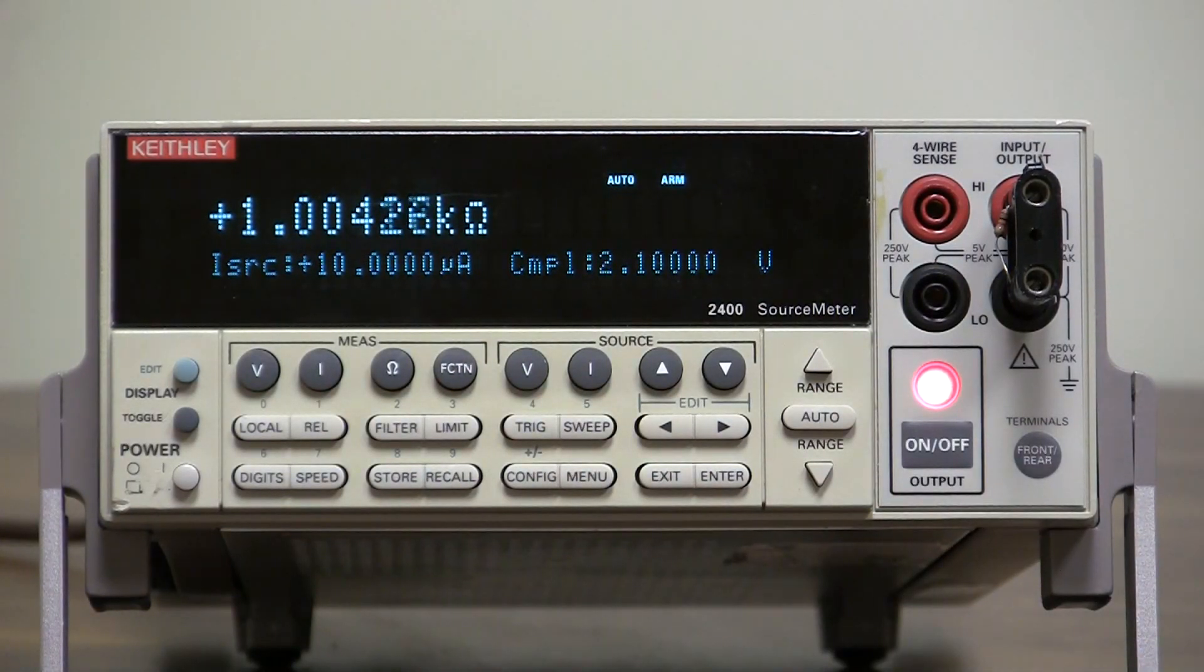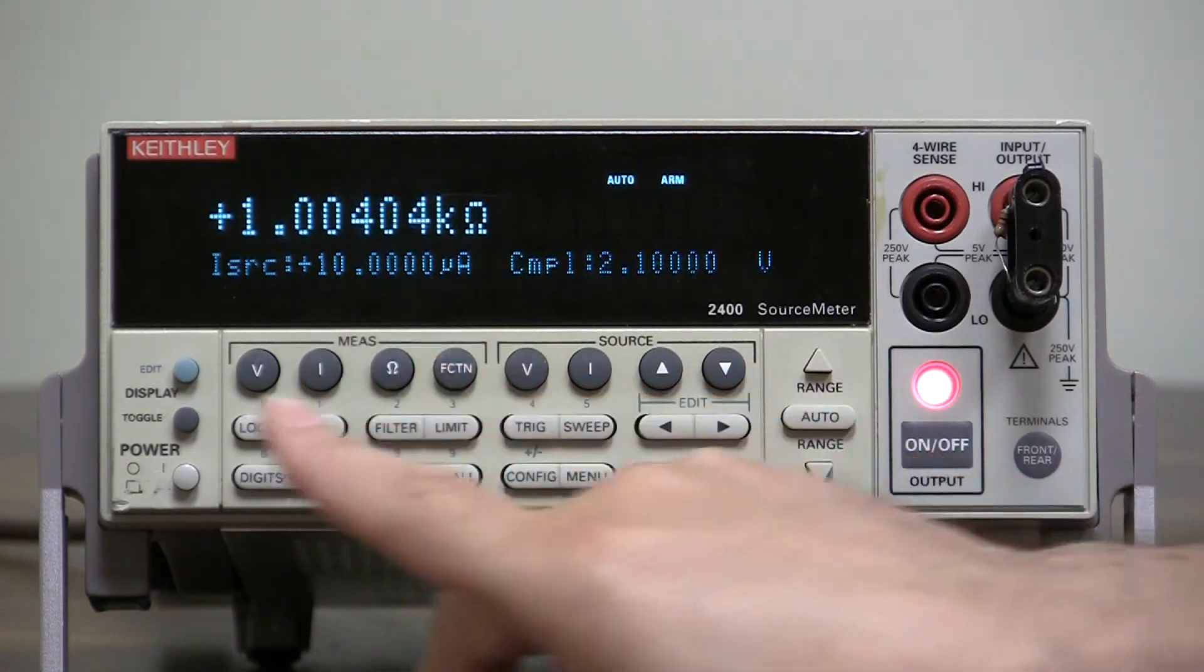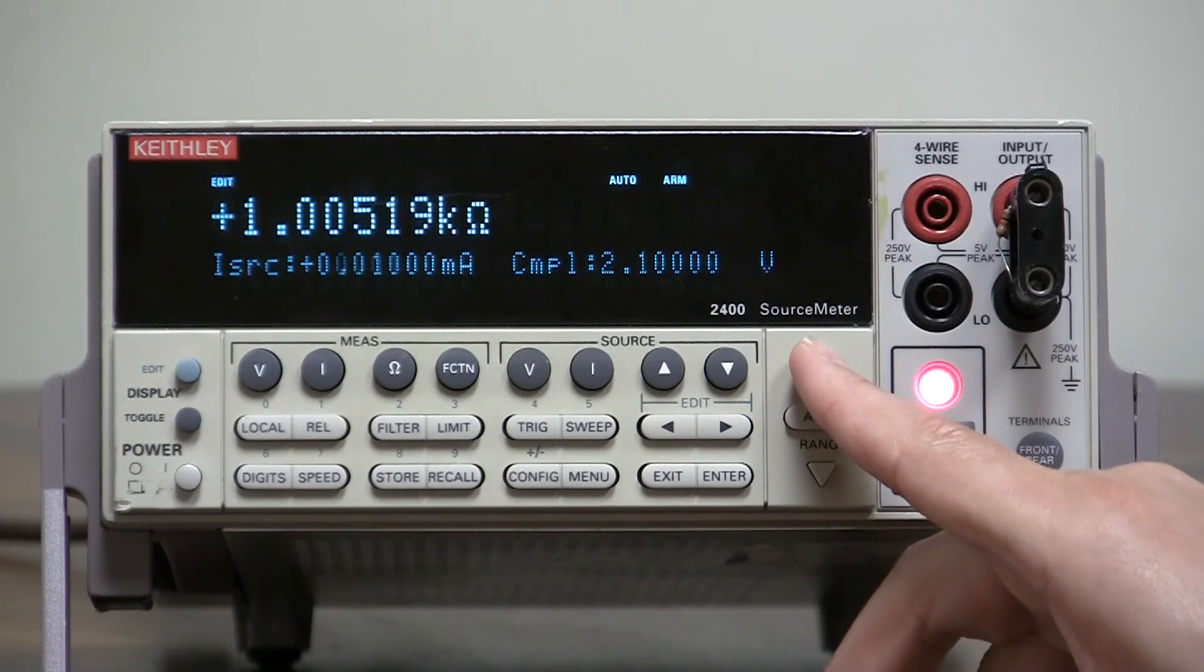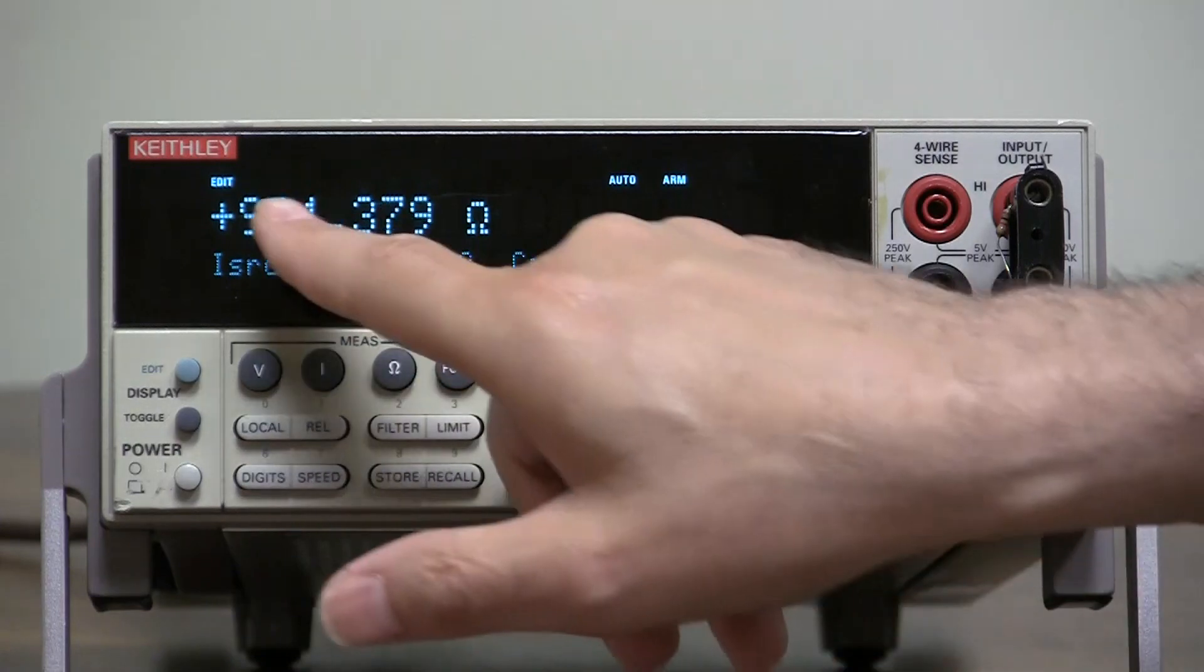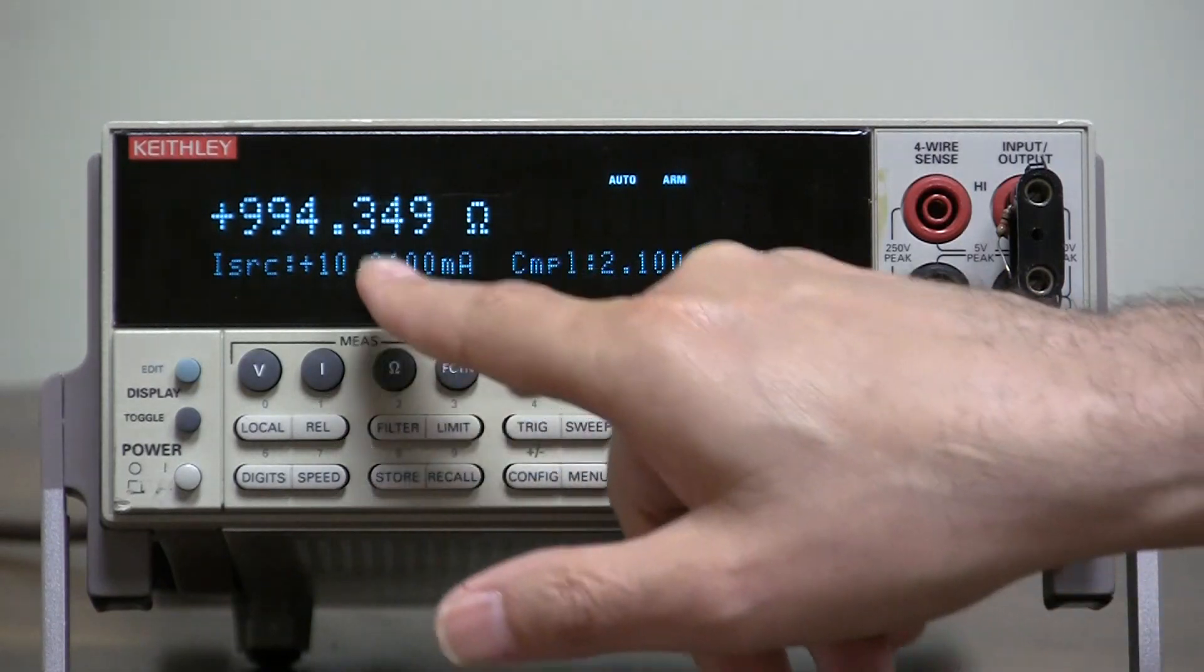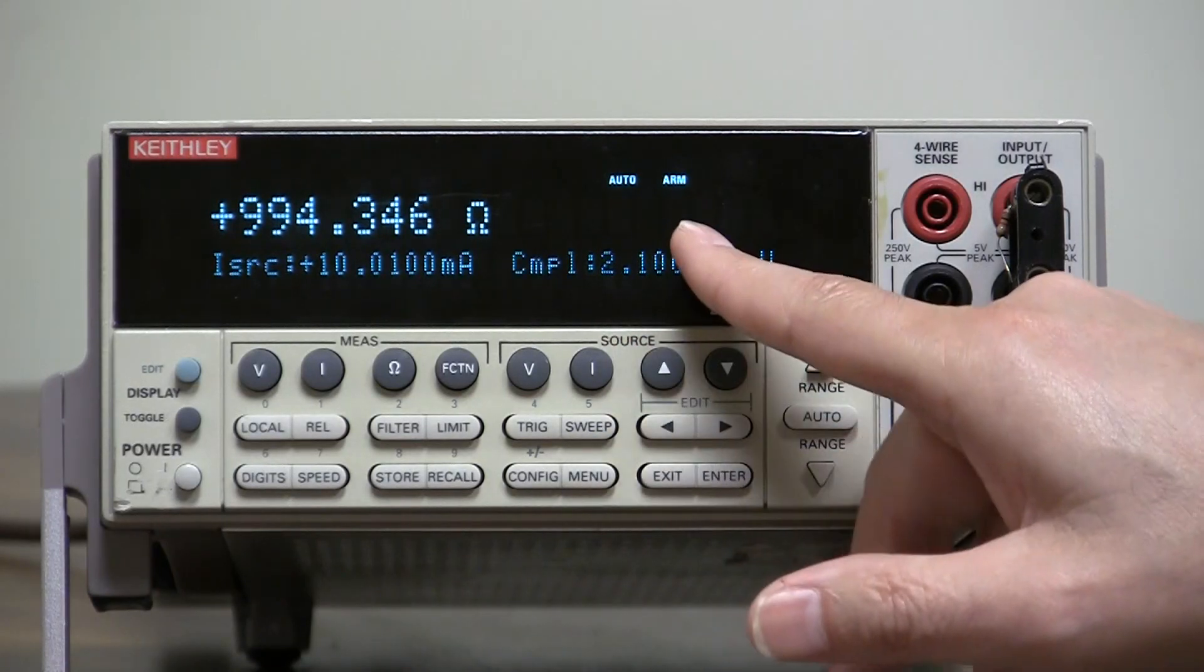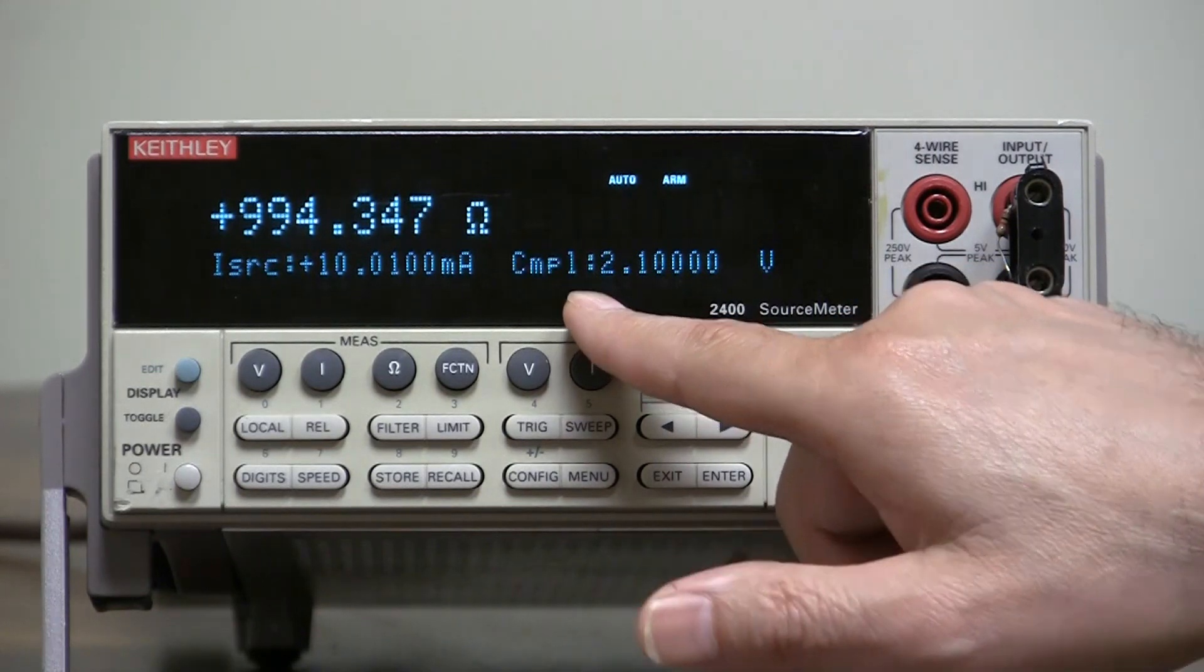Now, let's show real compliance. Real compliance is when we exceed this value here. So, to do that let's source a little more current. We'll press edit, up the range a little bit, let's go to maybe 10 milliamps. As soon as we do, look, the value goes down and this compliance is blinking. What it's trying to tell me is I'm trying to source 10 milliamps into 1K which would be 10 volts. It can't get there from here because of this 2.1 volts. So, the compliance is flashing trying to tell you that.